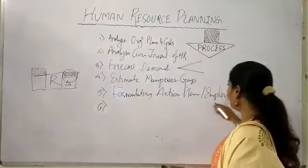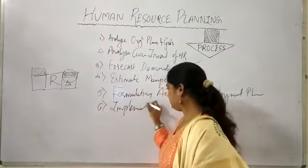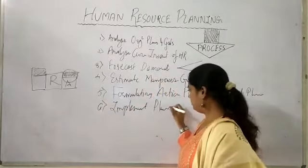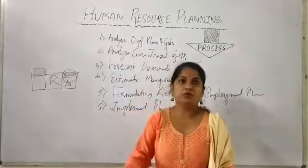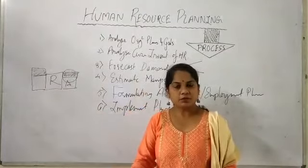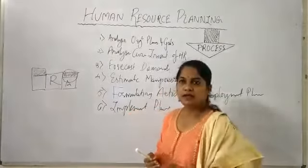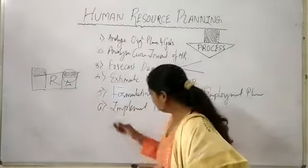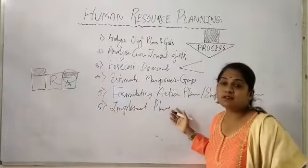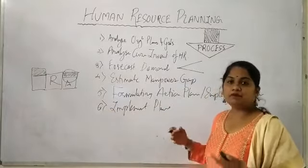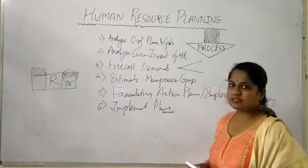Once the action plan or employment plan is ready, we implement it. The decision of removing or recruiting is executed — if you have a deficit and want to recruit, start recruiting through a selection procedure and interviews. Or, if not hiring, train the existing ones. Training and developing new and existing people will form a part of this implementation plan.